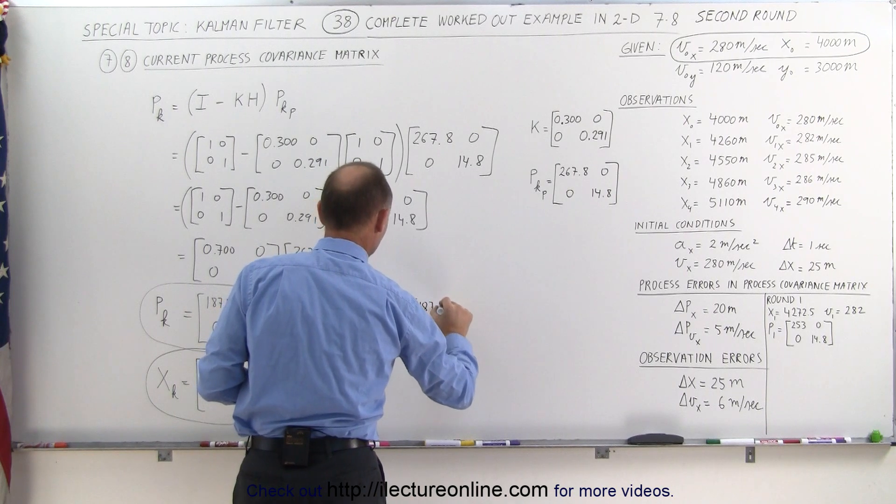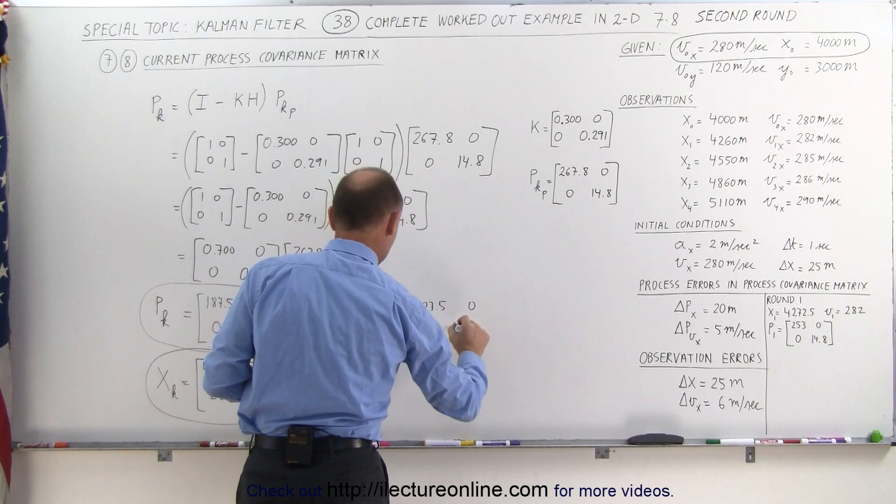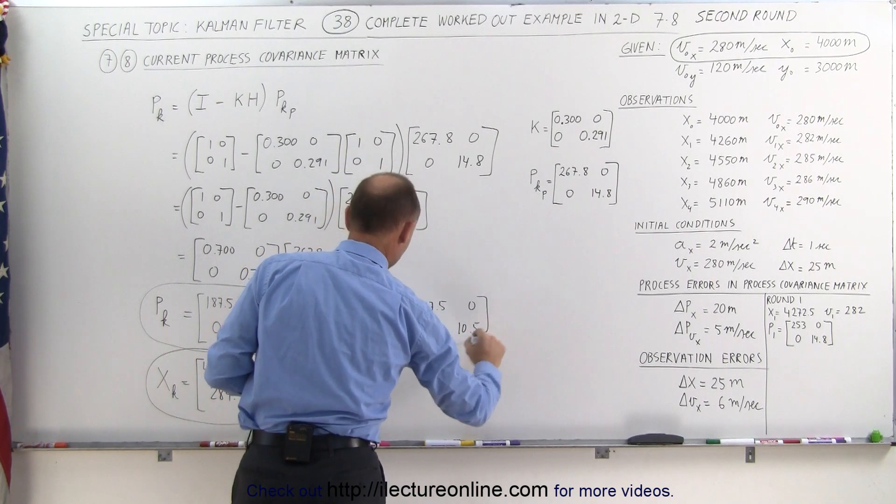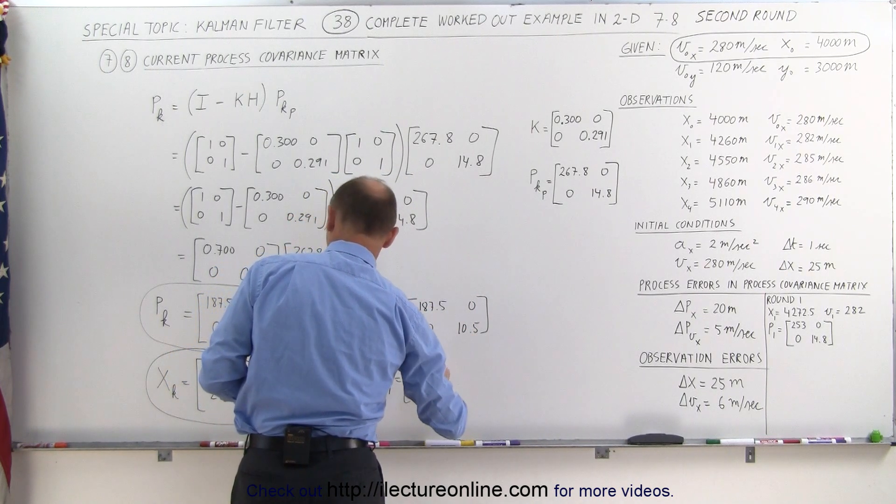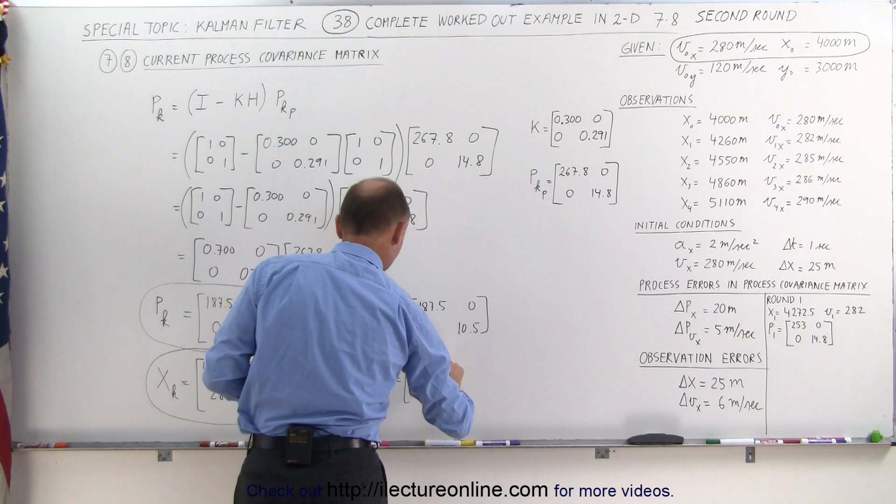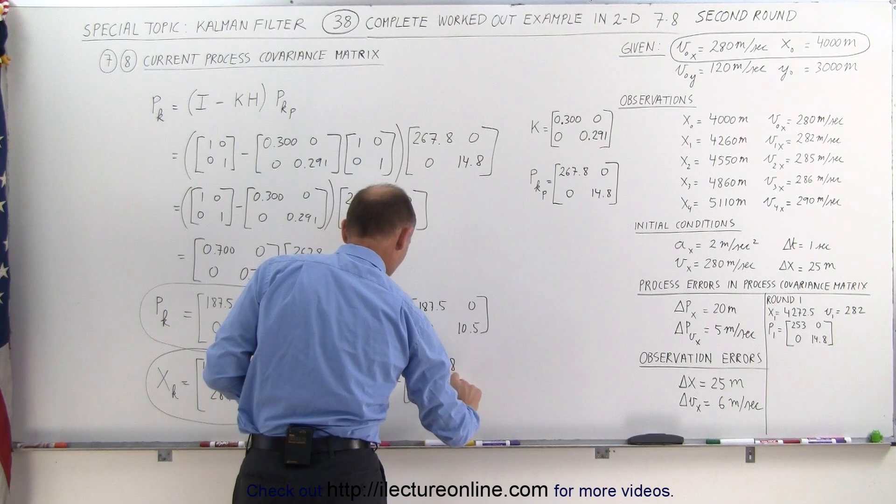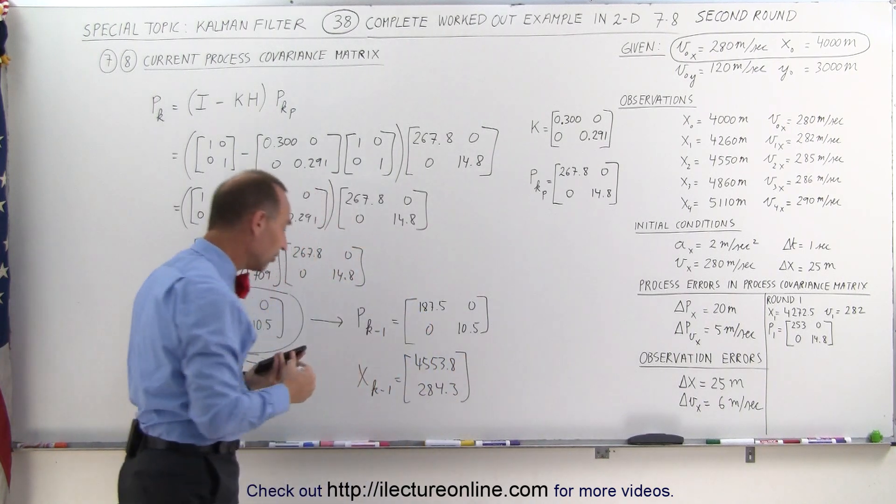And that would be 187.5, 0, 0, and 10.5, and then x k minus 1 is equal to 4553.8 and 284.3.